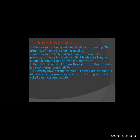Metals can be converted into sheets by hammering — when you hammer a metal continuously, it is converted into a sheet. This property is called malleability. Metals can also be stretched and drawn into wires — this property is called ductility. The wires in our house contain metals that are stretched and drawn into wire form. Metals like silver, gold, copper, and platinum can be drawn into fine wire. So metals have both malleability and ductility properties.